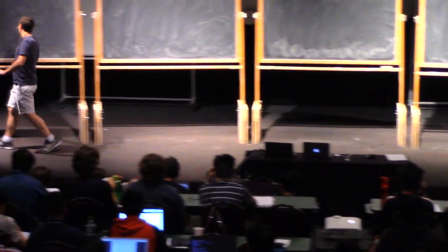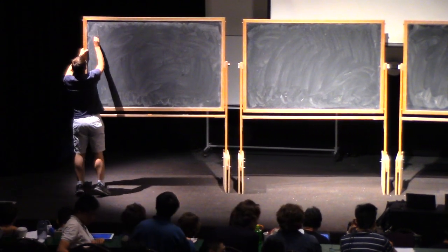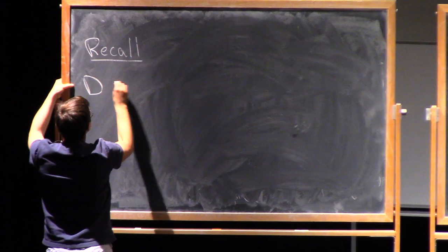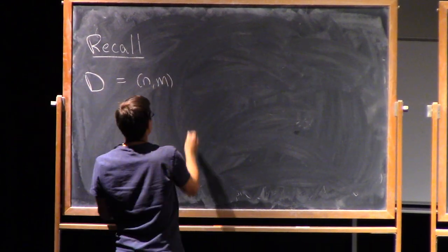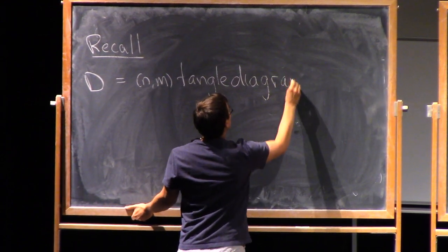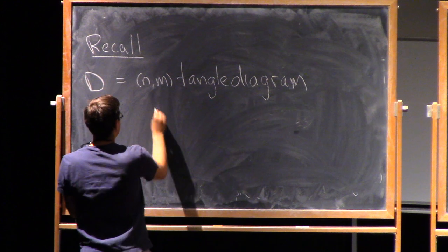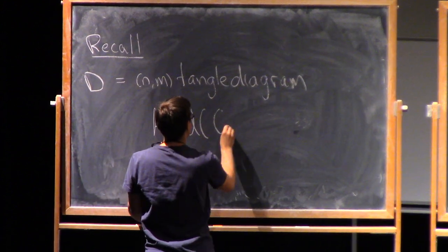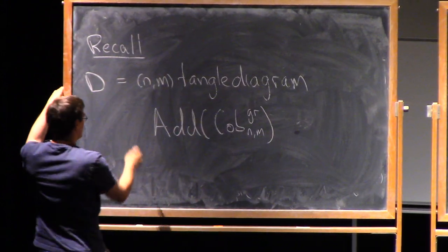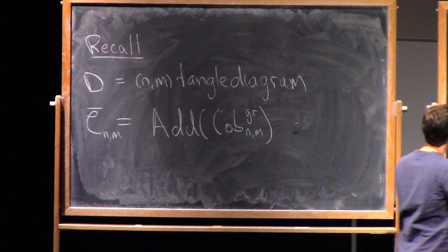Today I'd like to talk about the Bar-Natan category and the Khovanov homology of a tangle. Say D is an N-M tangle diagram. We had this category, which had the horrible name 'Add of Cob(N,M)-gr', but let's just abbreviate that by C-bar of N,M. And now we have the cube of resolutions.